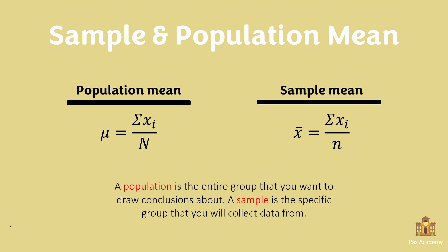As you can see on the left hand side, we have the population mean formula, which is mu is equal to the sum of x sub i over N, so the population size. And on the right hand side, we have the sample mean, which is x bar is equal to the sum of x sub i divided by the sample size.